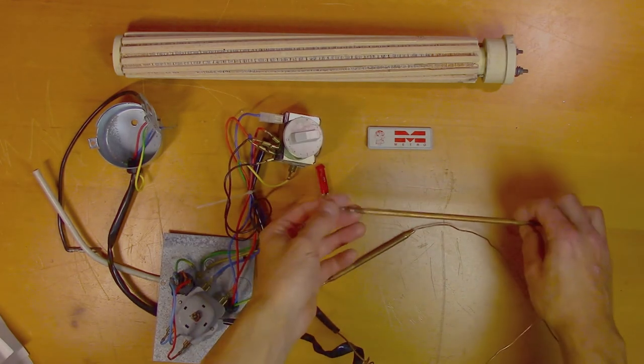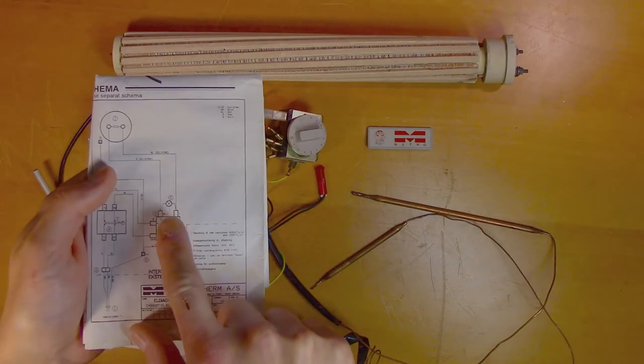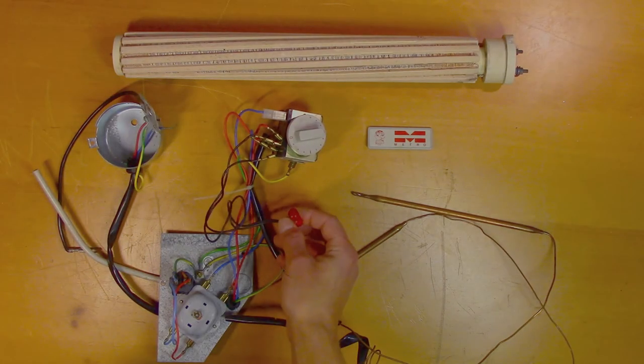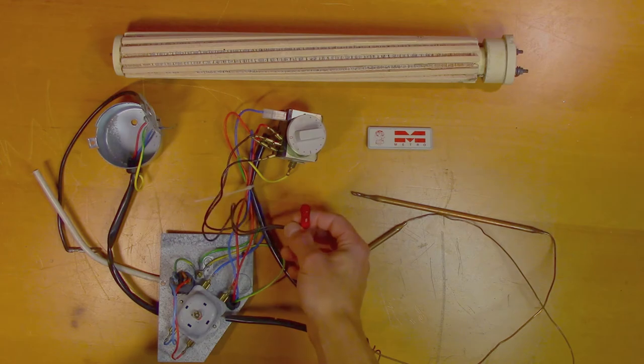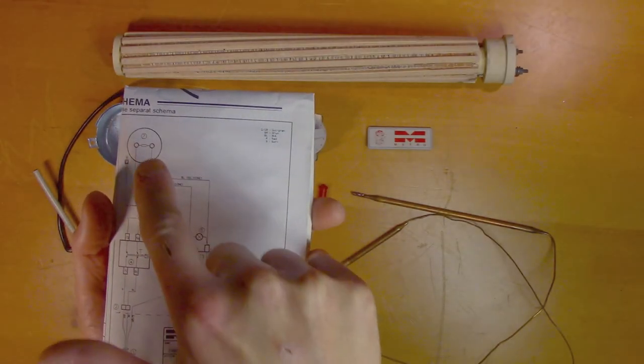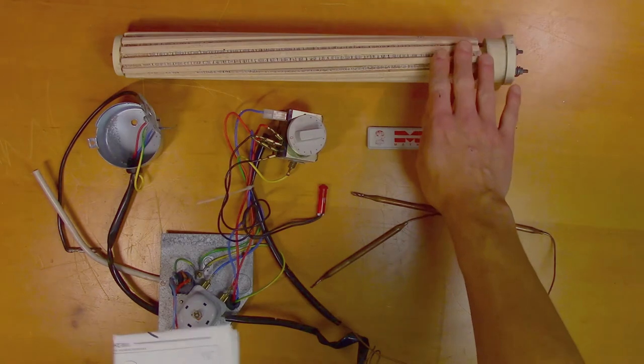And then we have the light bulb. This indicates when voltage is applied to the heating element. And then we have the last component, the heating element itself. And it's this thing here.